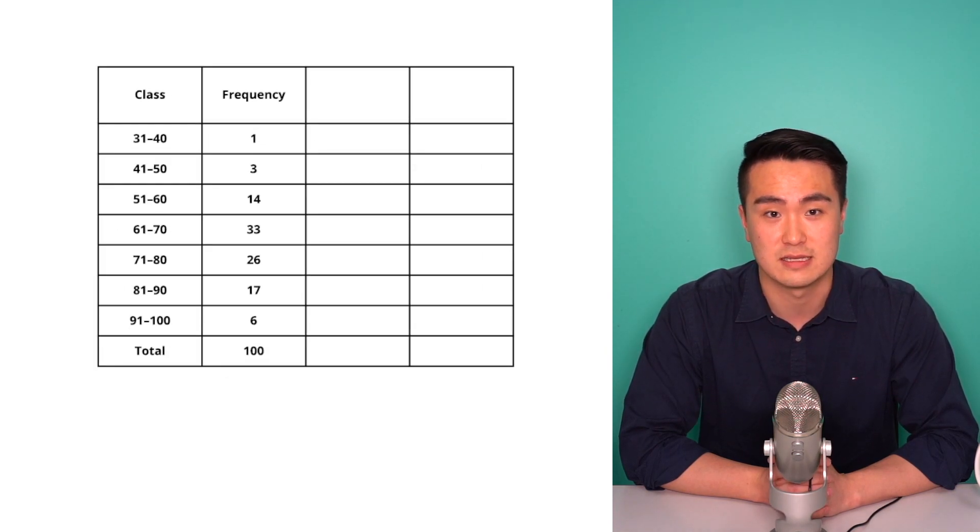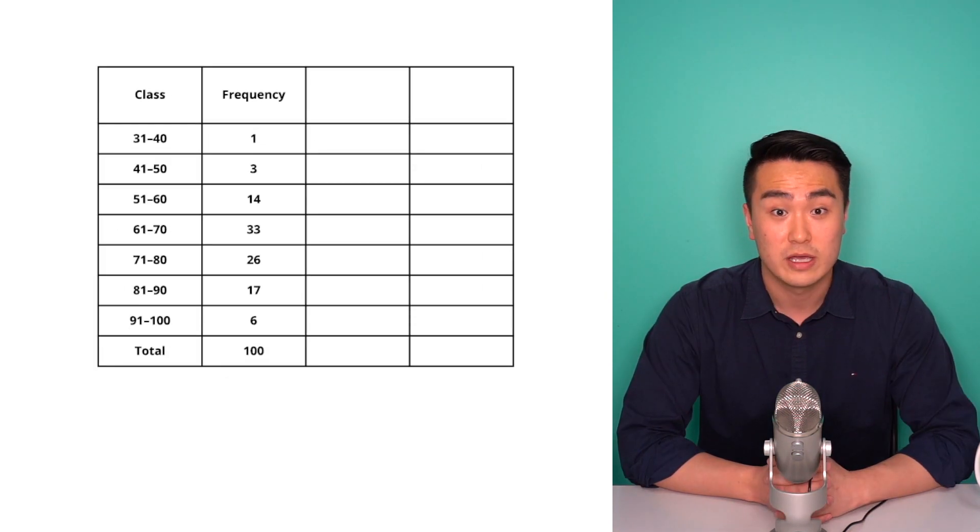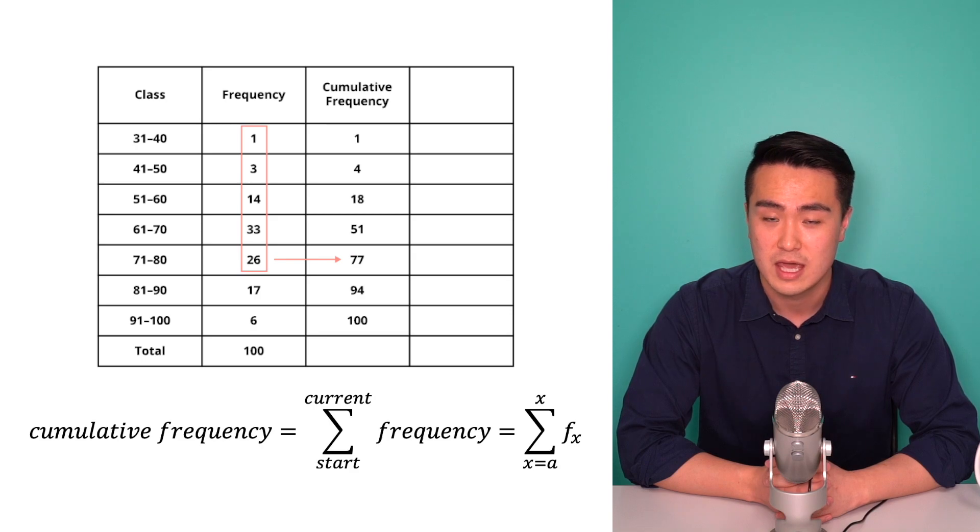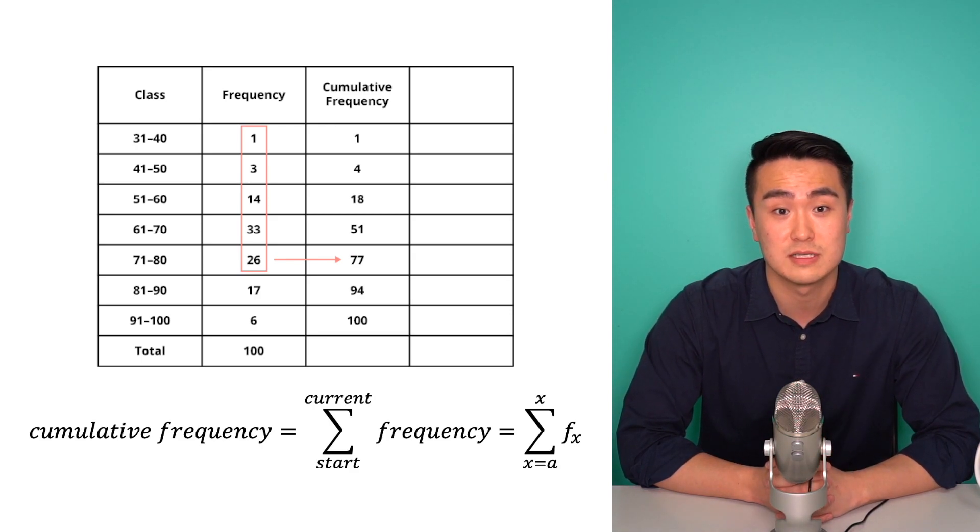Now if we construct a new bin frequency table, it is much easier to digest and analyze. We can also calculate the cumulative frequency which refers to the sum of frequencies from the first to the current outcome. It's pretty much a running total of frequencies from the start.